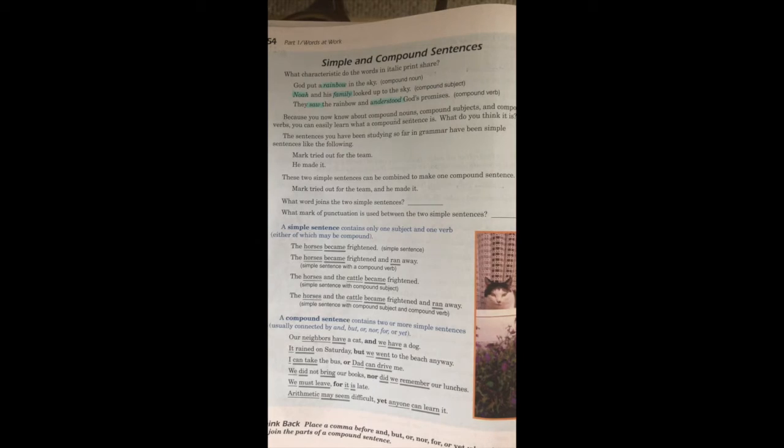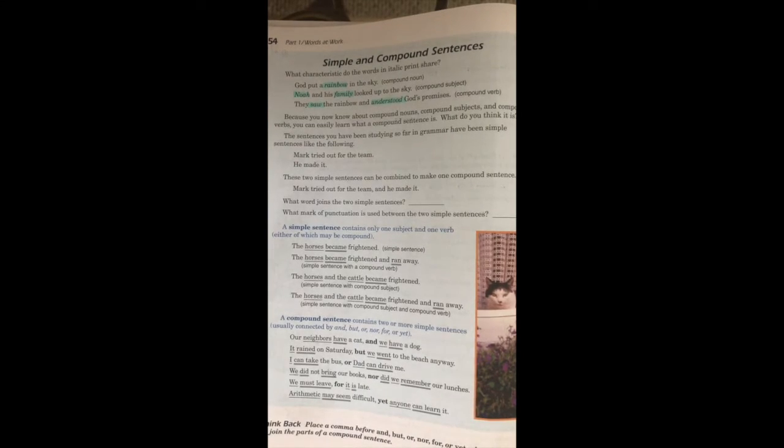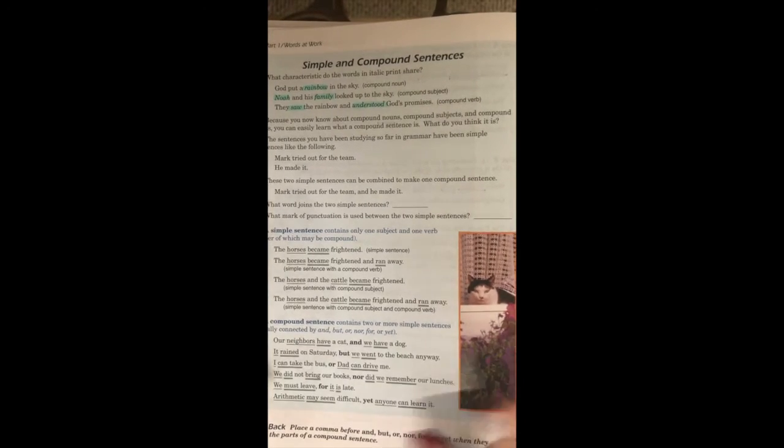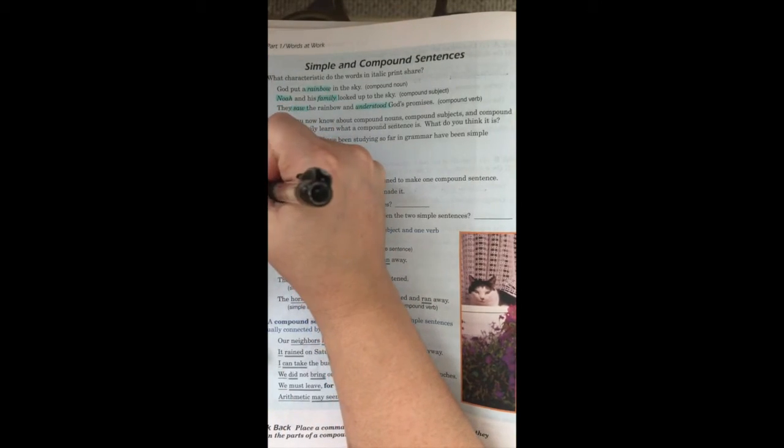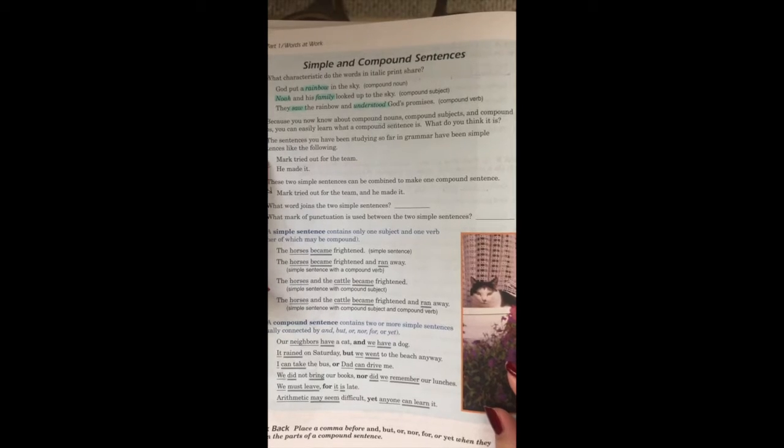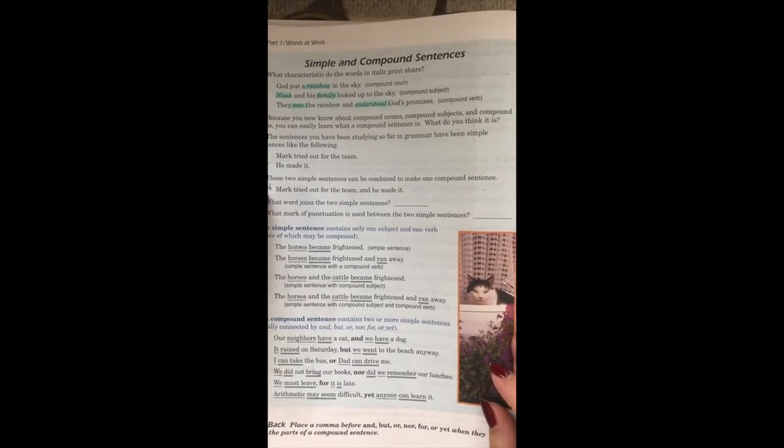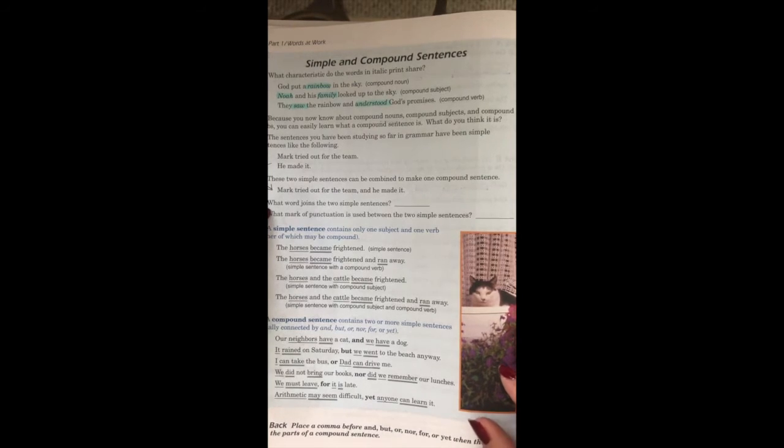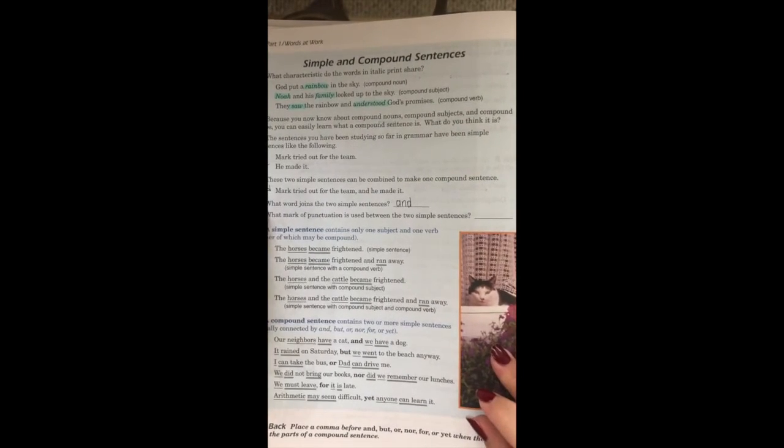Now that we know all about compound nouns, compound verbs, and compound subjects, we are going to continue to study simple sentences and compound sentences and the difference between the two. Two simple sentences can be combined to make a compound sentence, which we have done before. Mark tried out for the team and he made it. But we can simply put it into one long sentence. And our joining words - and is our joining word, as we did last week and as we have been including in our diagrams.